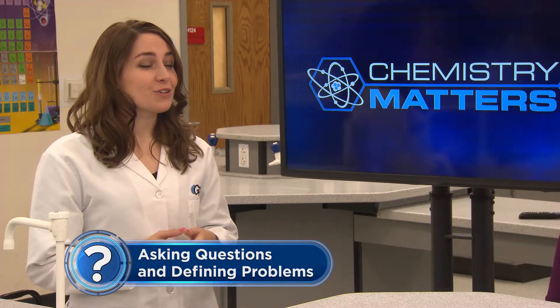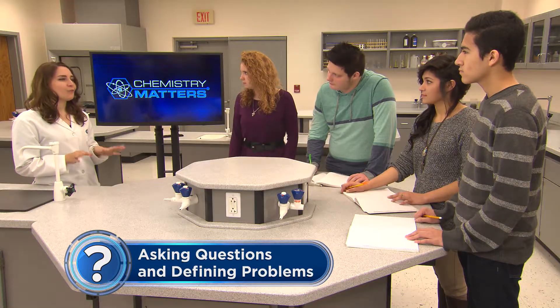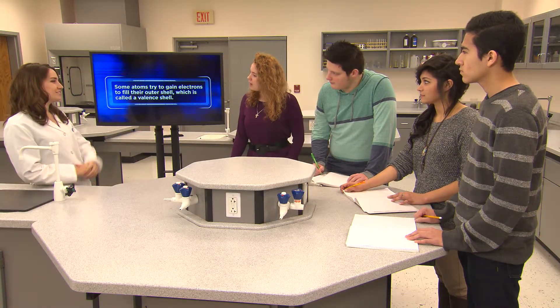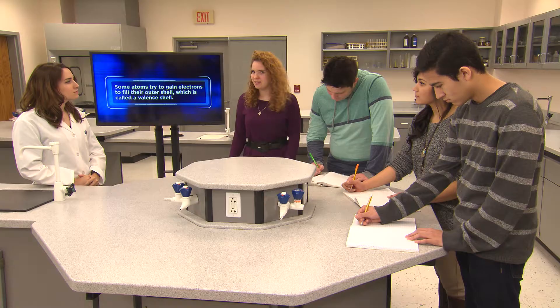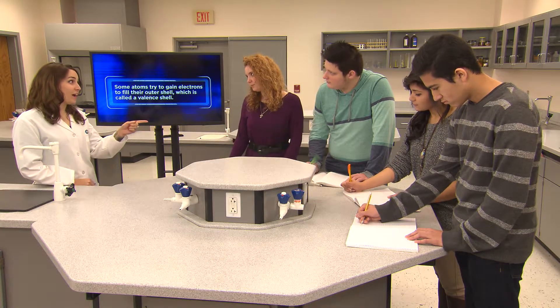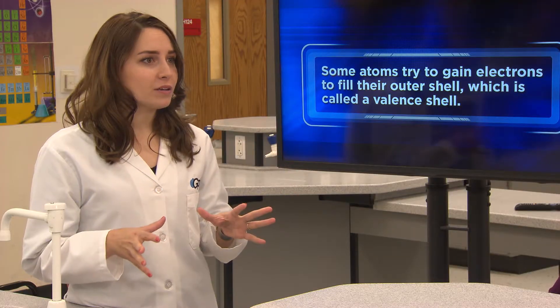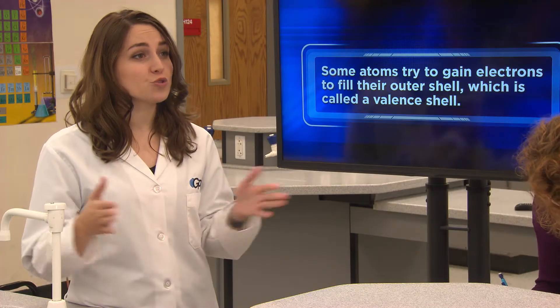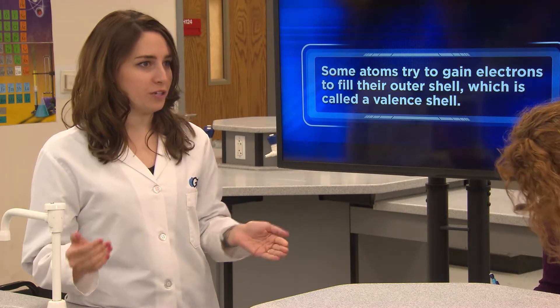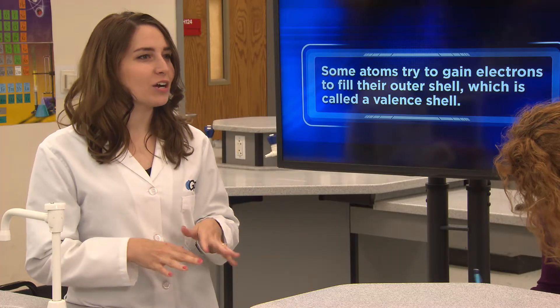Let's look at some statements about chemical bonds and see if you can tell whether they're true or false. You might need to think back to your middle school science classes. Larissa, why don't you try the first one? "Some atoms try to gain electrons to fill their outer shell, which is called a valence shell." I don't think that's true because atoms aren't really trying to do anything. That's right — atoms aren't human, so that's not a good way to describe them. It's actually electrical forces that cause atoms to move toward each other and away from each other. We'll get into more detail on those forces later in this unit.